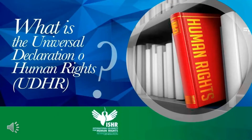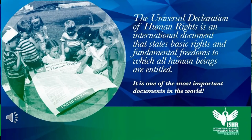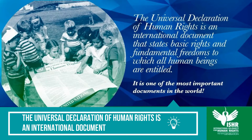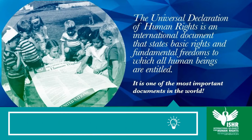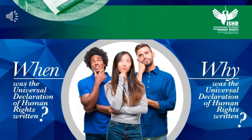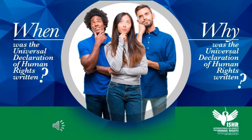What is the Universal Declaration of Human Rights? The Universal Declaration of Human Rights is an international document that sets out the basic rights and fundamental freedoms to which all human beings are entitled. It is one of the most important documents in the world.